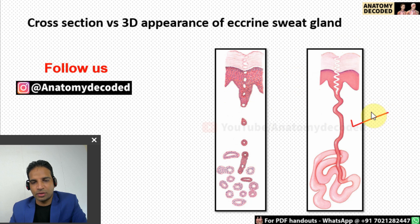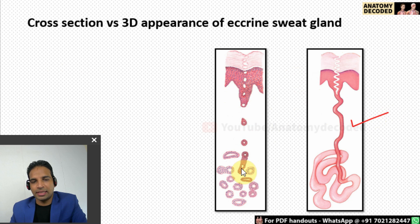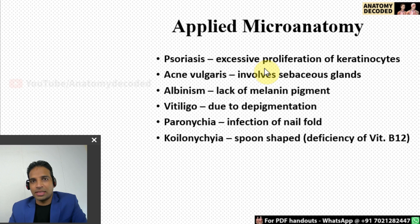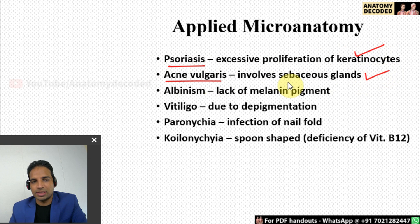This image shows an actual 3D image of a sweat gland, and when we take a section and view it in a slide there will be multiple cut sections of the sweat gland visible. This is a good overview of how the actual sweat gland appears in the body versus how we see it in a micro anatomy image. The applied micro anatomy of the integumentary system includes several clinical conditions.